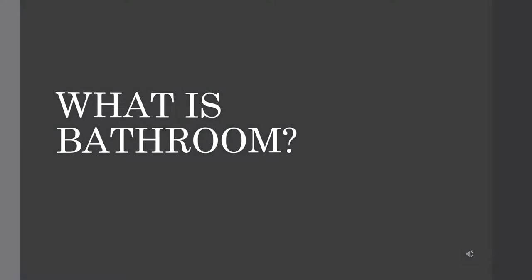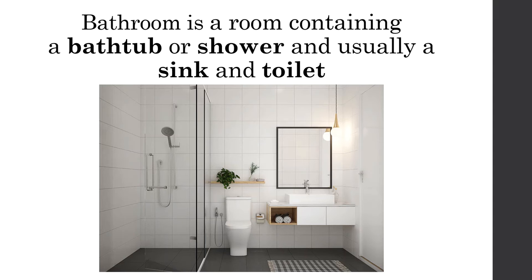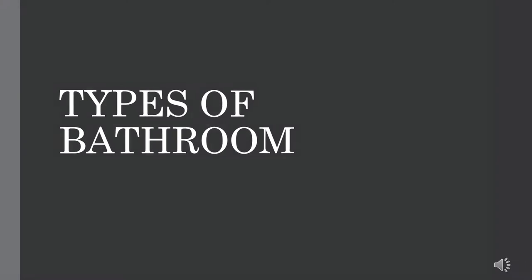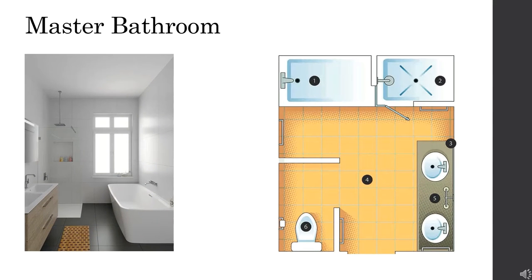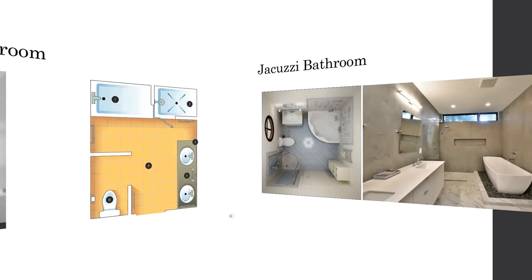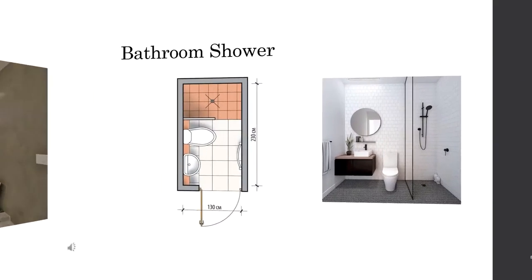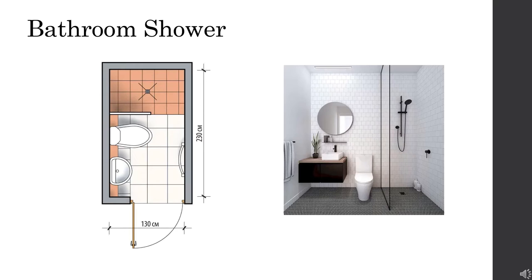What is a bathroom? A bathroom is a room containing a bathtub or shower and usually a sink and toilet. There are several types of bathroom. Master bathroom contains four plumbing fixtures — a toilet and sink, and either a bathtub with a shower, or a bathtub and a separate shower stall. Jacuzzi bathroom is a large bath with a system of underwater jets of water to massage the body. A shower is a place in which a person bathes under a spray of typically warm or hot water.